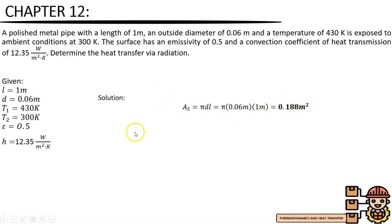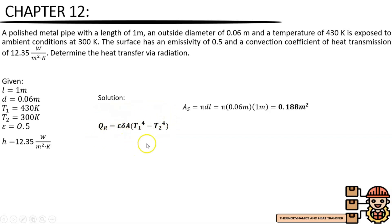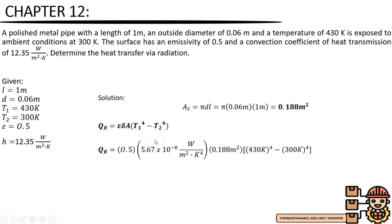Now that we have the value for our surface area, we can now solve the heat transfer via radiation. The heat transfer via radiation is equals to emissivity times the Stefan-Boltzmann constant multiplied by the area, times the difference of temperature T1 raised to the power of 4 minus temperature T2 raised to the power of 4. Since we have all the values for this problem, we only need to substitute.